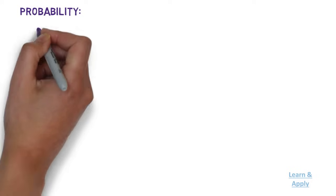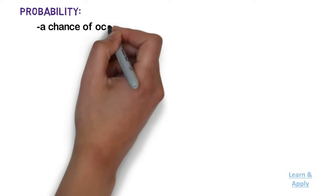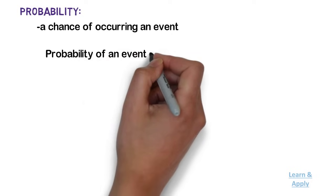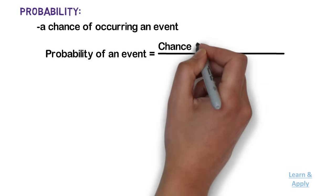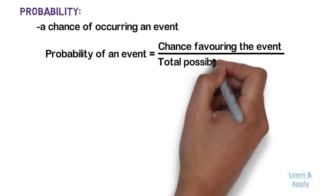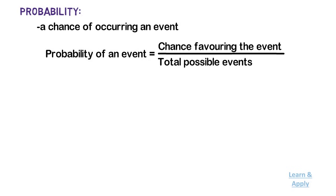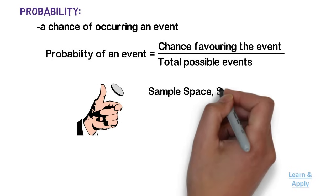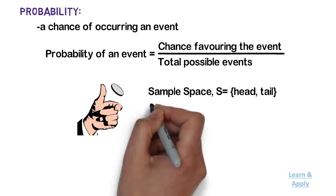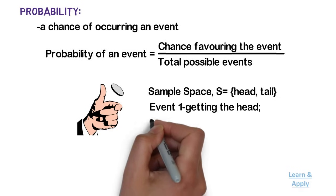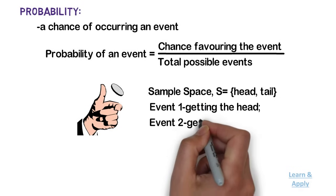Probability: it is the chance of occurring an event. Probability of an event is the ratio of chances favoring the event by total possible events. For example, tossing of a coin is an experiment. Here, sample space S is equal to {head, tail}. Event 1 is getting the head and Event 2 is getting the tail.